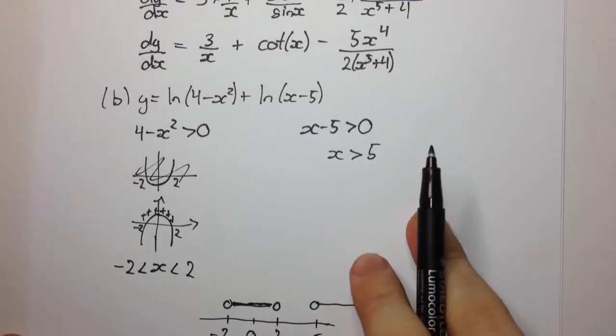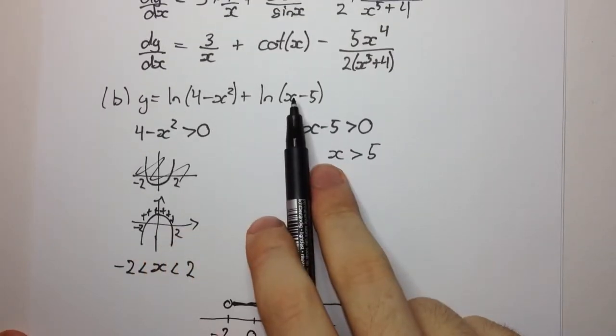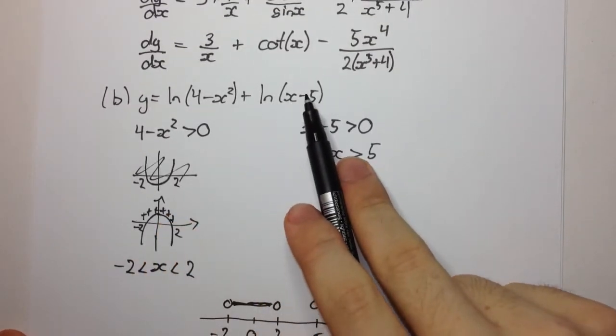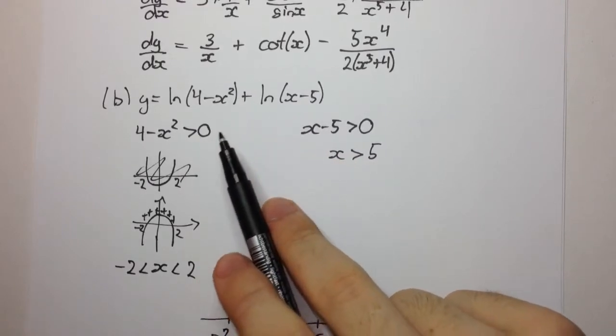And you can see there's no overlap of x values. So therefore, this function, which looks quite harmless, this function doesn't even exist. If you were to try to graph this function, it's not possible.